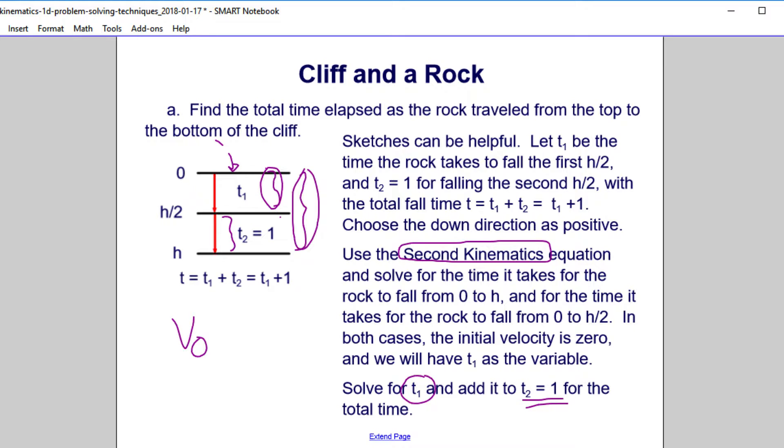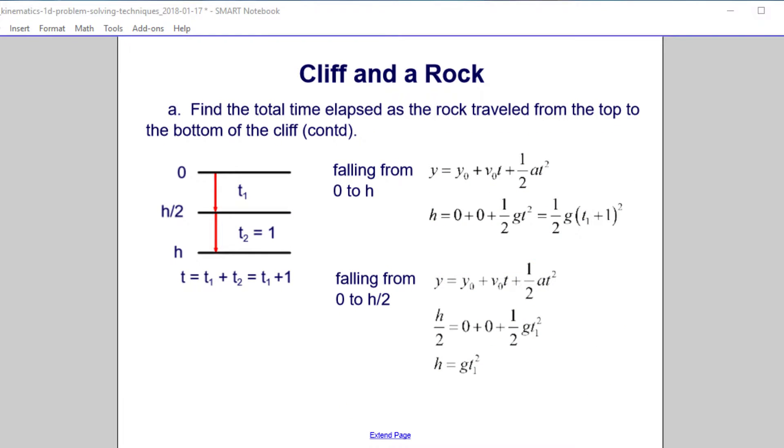So you can review this again, or you can go to the next slide. Perhaps the equations will be a little more clear than the words I'm trying to explain here. The first equation we're going to work with is when you fall from 0 to h. So here's our second kinematics equation. Our final position is h. Our initial position is 0.